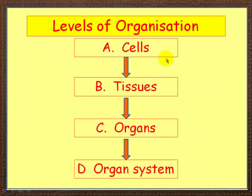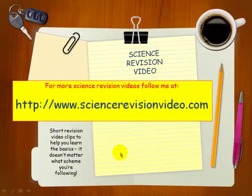To summarize the levels of organization: we start with cells. Cells are organized into tissues. Tissues are organized into organs. And organs are organized into organ systems. That finishes this video — if you want to access more videos, simply go to the website shown here. Lots of free resources for you to access. Thanks for listening and watching — bye for now.